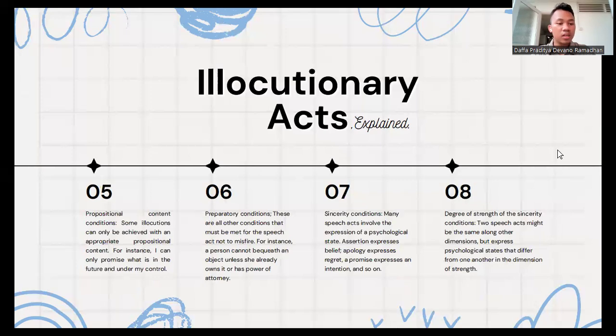Next is propositional content conditions. Some illocutions can only be achieved with appropriate propositional content. For instance, I can only promise what is in the future and under my control. And then preparatory conditions are all other conditions that must be met for the speech act not to misfire. For instance, a person cannot bequeath an object unless she already owns it or has power of attorney.